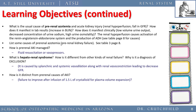Pre-renal azotemia is managed by replacing what's causing the drop in pressure — giving IV fluid, vasopressors, or blood. The problem with giving blood is its high protein content from red cells, so you must be aware that giving blood to someone with pre-renal azotemia could push the BUN too high.